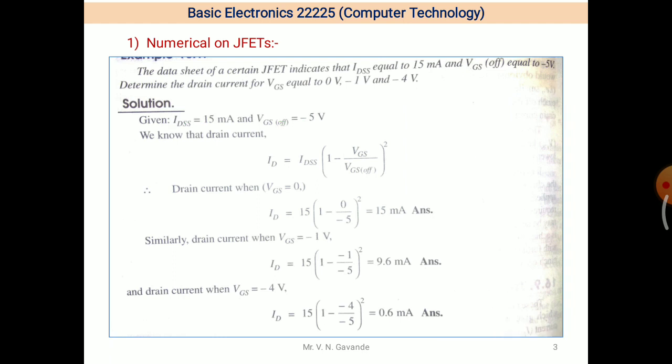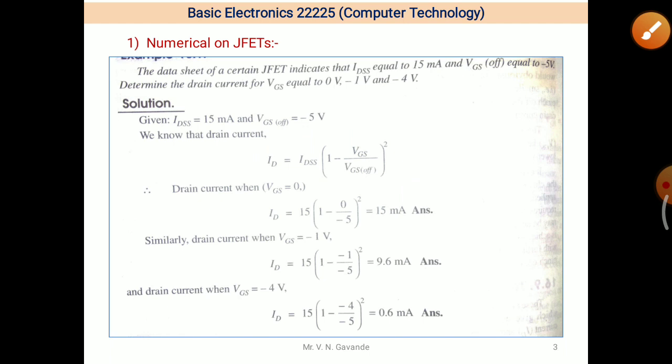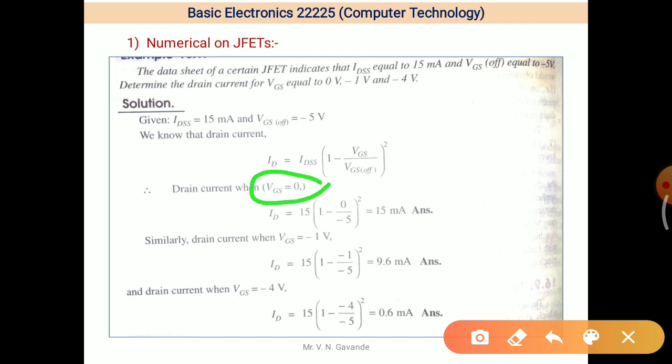These are the given things: IDSS 15 mA, VGS OFF is minus 5. So we have to use this formula for drain characteristics. ID is equal to IDSS times bracket square, inside the bracket 1 minus VGS divided by VGS OFF. Now find out first value of ID for VGS is equal to 0. So similar formula is used. ID is equal to 15 mA in square 1 minus 0 divided by minus 5, bracket square is equal to 15 mA.